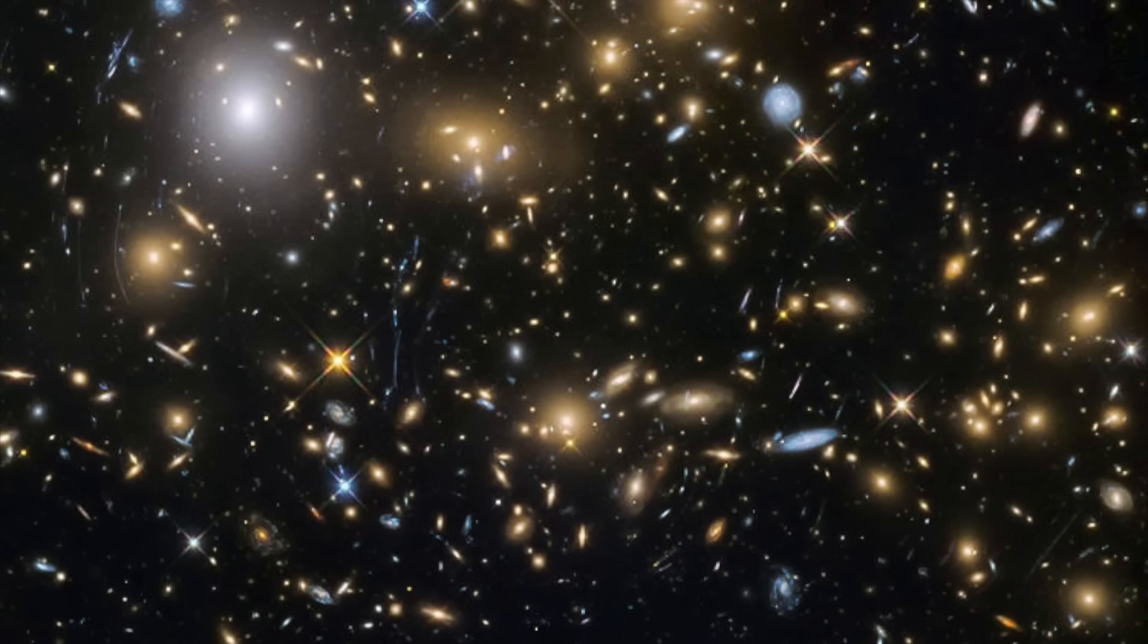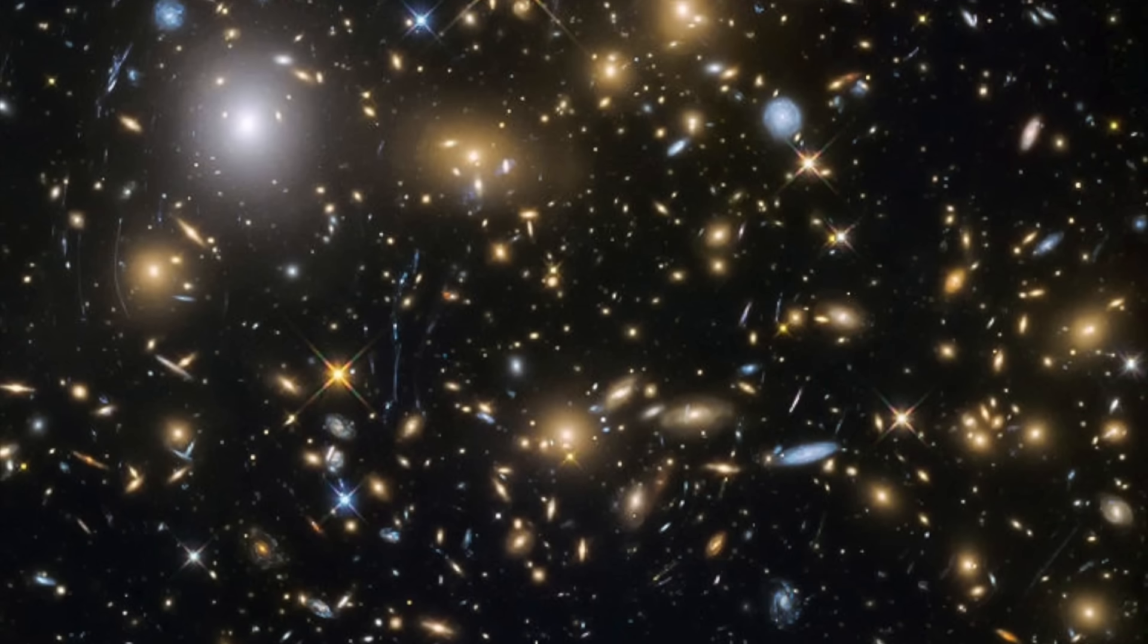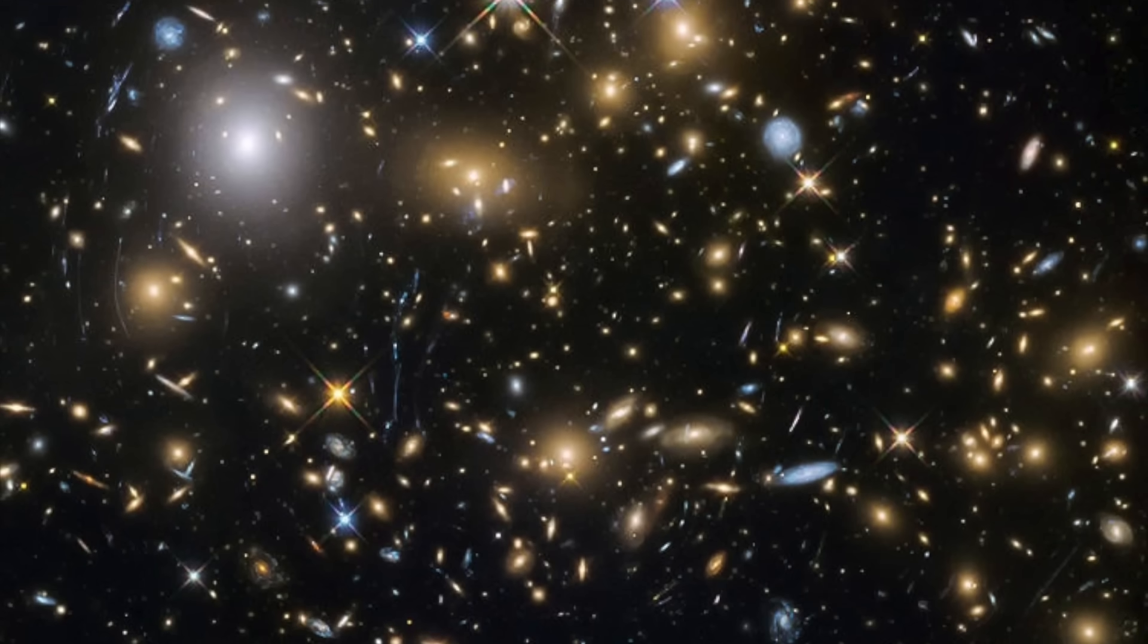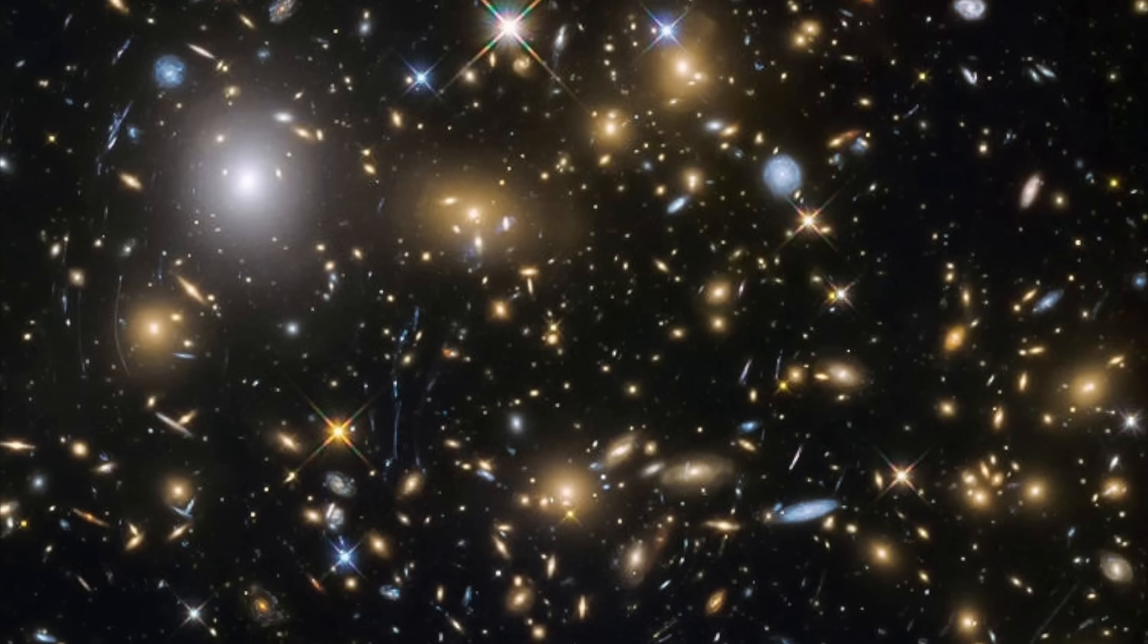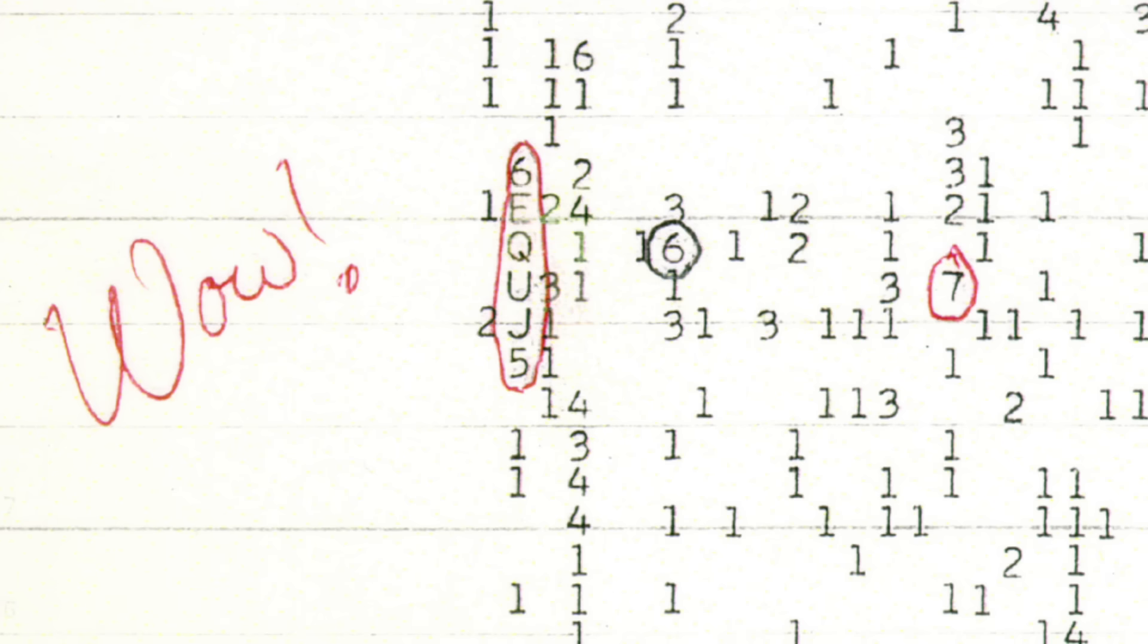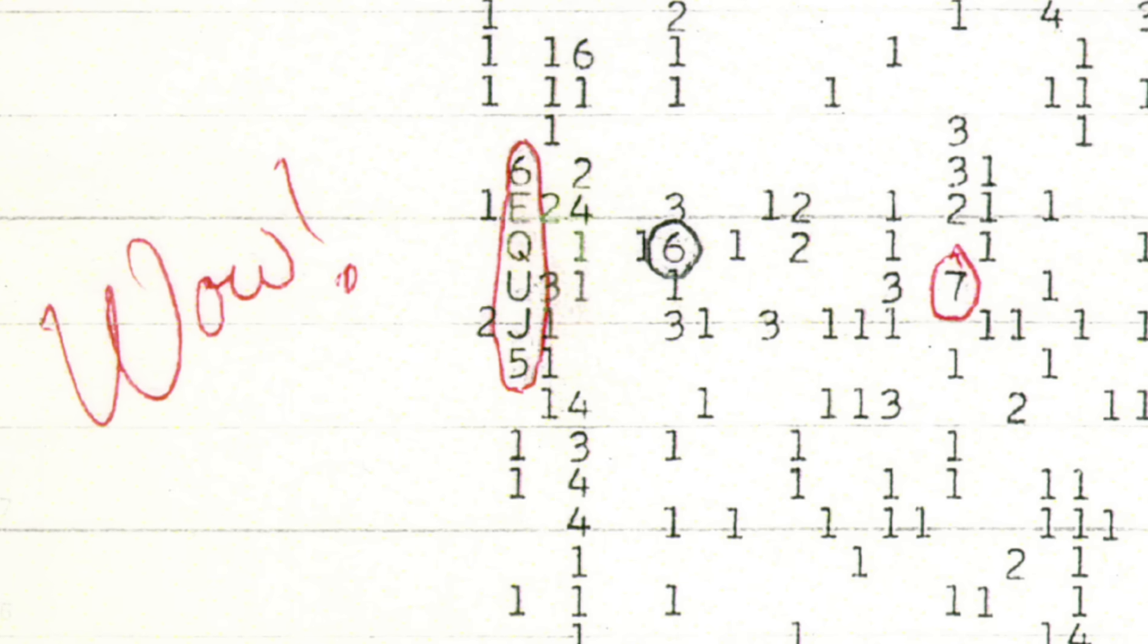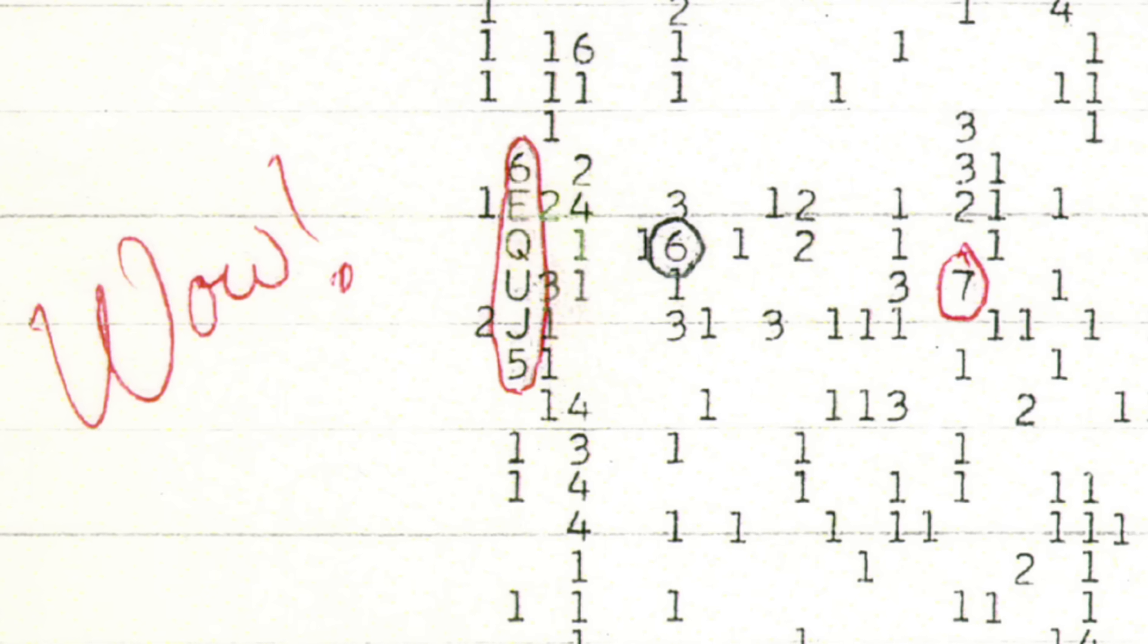On August 15, 1977, the Ohio State University's Big Ear radio telescope famously picked up what became known as the WOW signal, due to scientist Jerry Eman, a guest I interviewed at Event Horizon, writing on the computer printout the iconic word WOW.